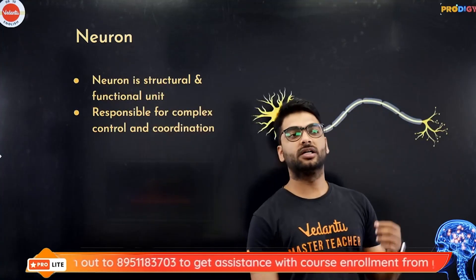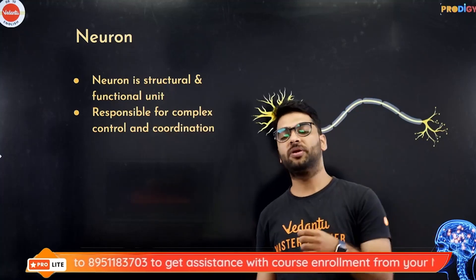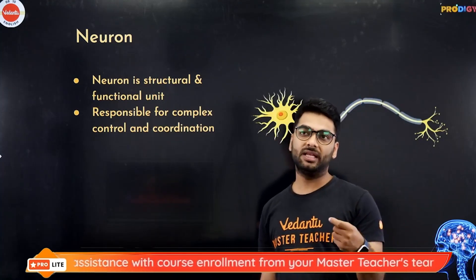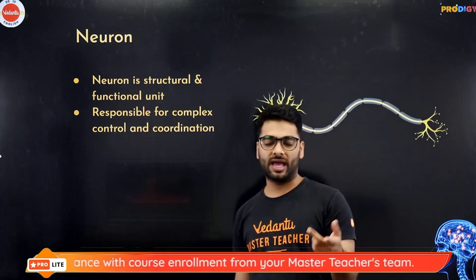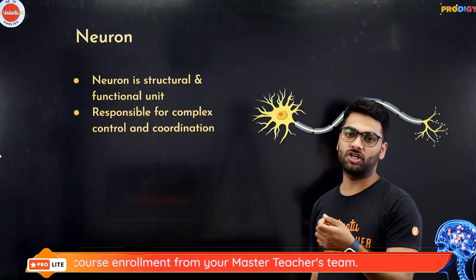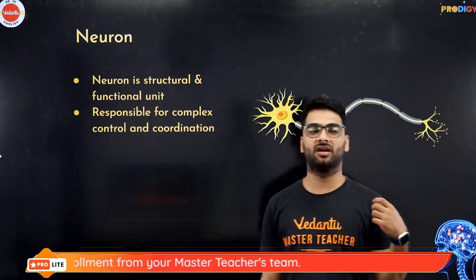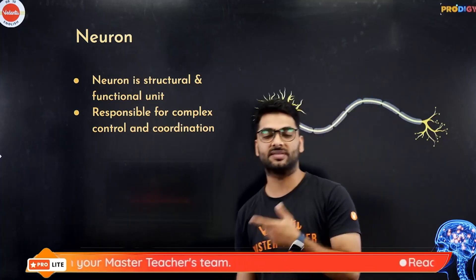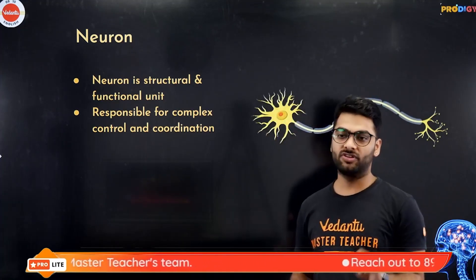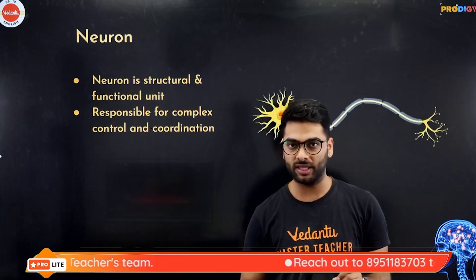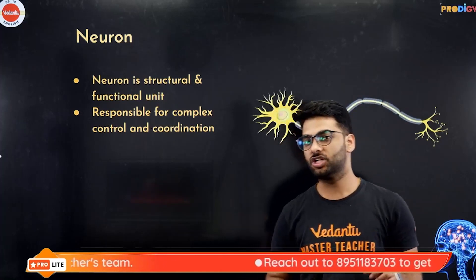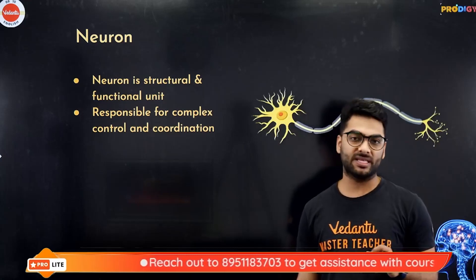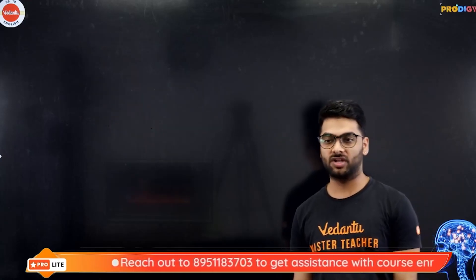Just like the entire human body is made up of cells — cell is the functional unit of the organism — similarly, nephron is the functional unit of the kidneys, alveoli are the functional unit of the respiratory system. Similarly, the neuron, which is the longest cell of the human body, is the functional unit of the nervous system, responsible for complex control and coordination.